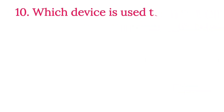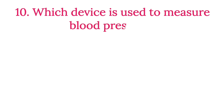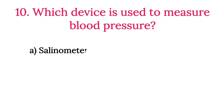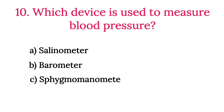MCQ Number 10: Which device is used to measure blood pressure? Option A: Selenometer. Option B: Barometer. Option C: Sphygmomanometer. Option D: Protometer. The correct option is Option C, Sphygmomanometer.